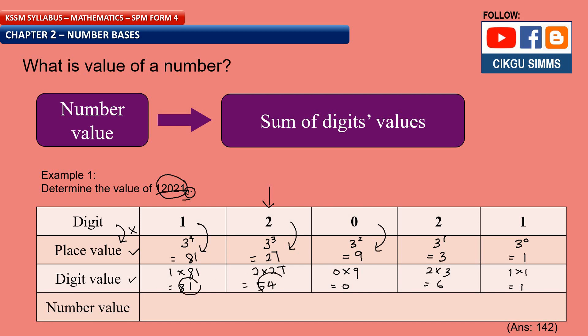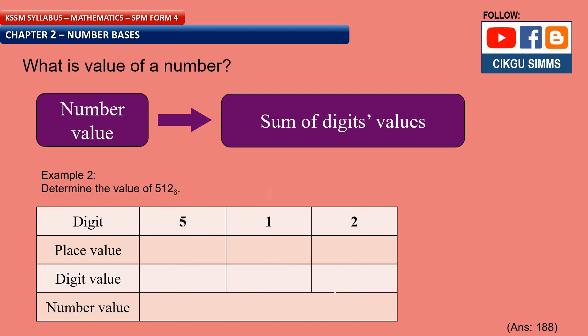So you need to add all of this digit value. So the number value is 81 plus 54 plus 0 plus 6 plus 1. And then you can calculate. And then the final answer will be 1, 4, 2. Let's see the second example.